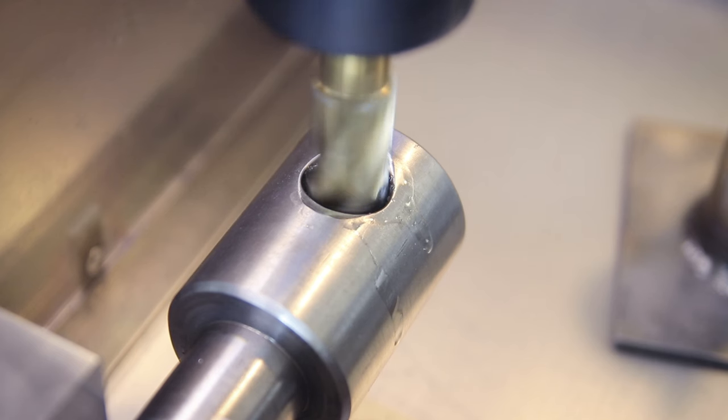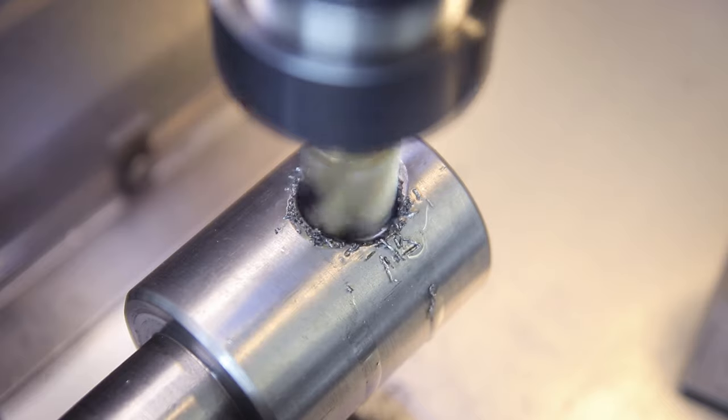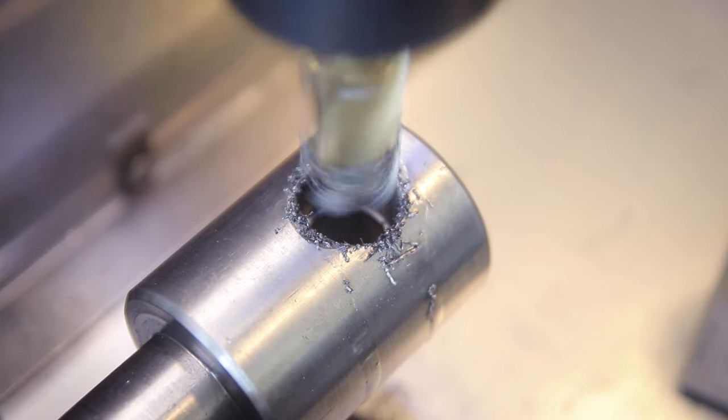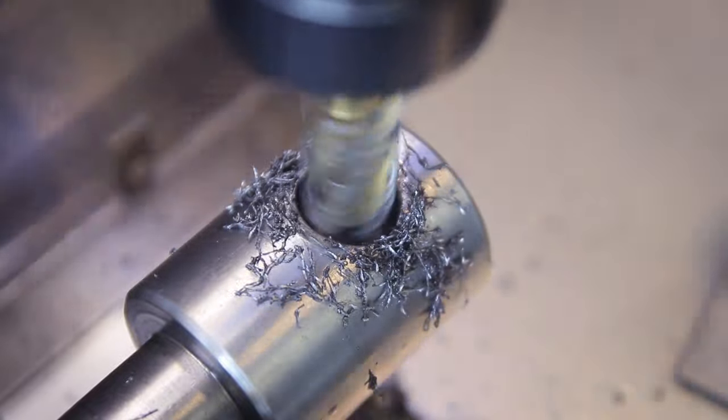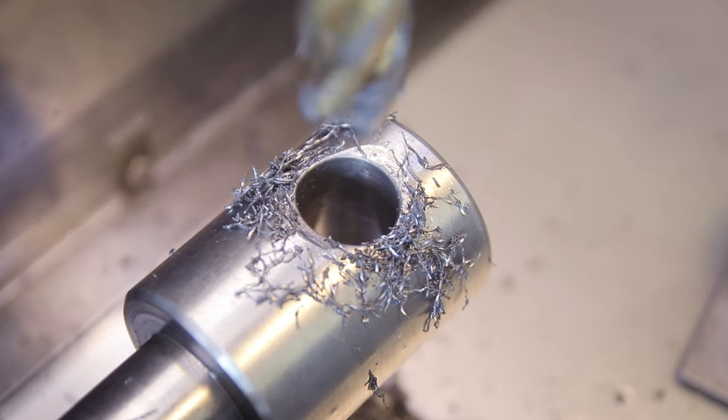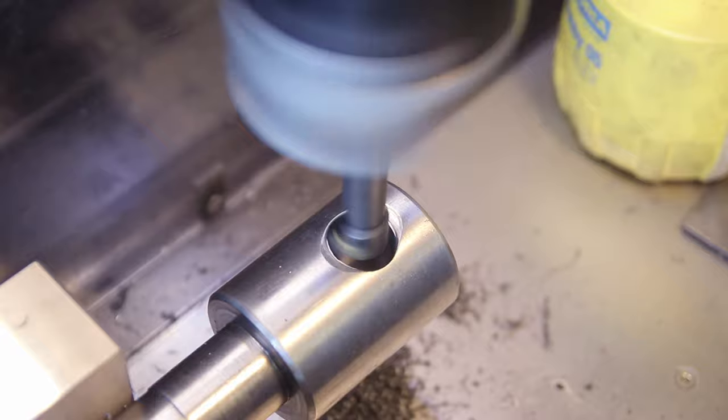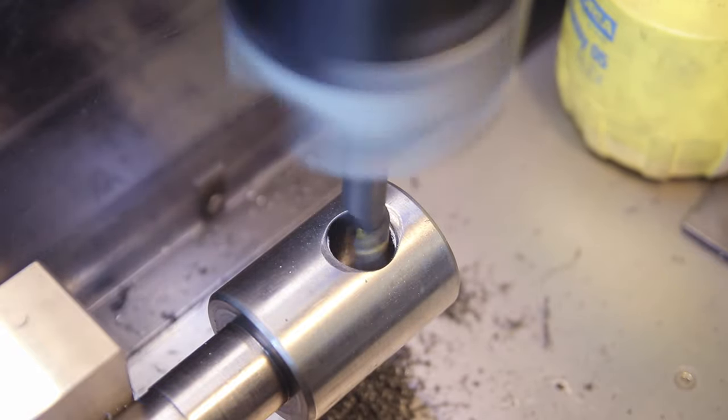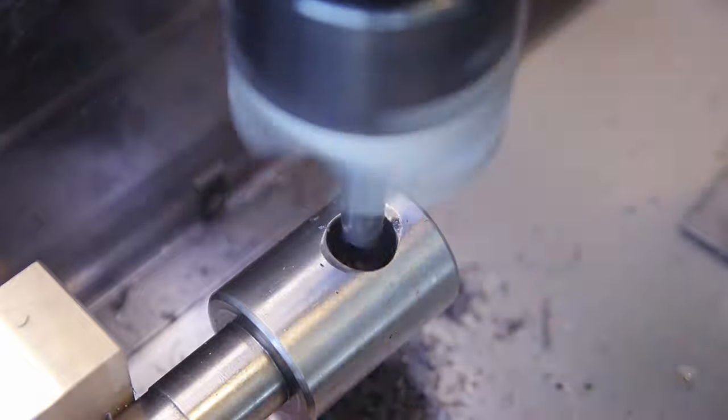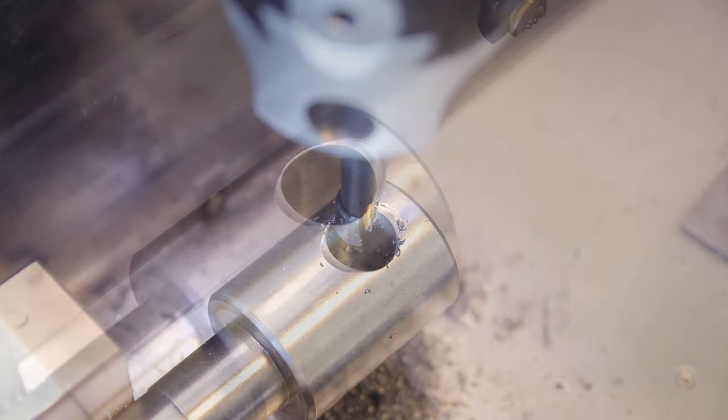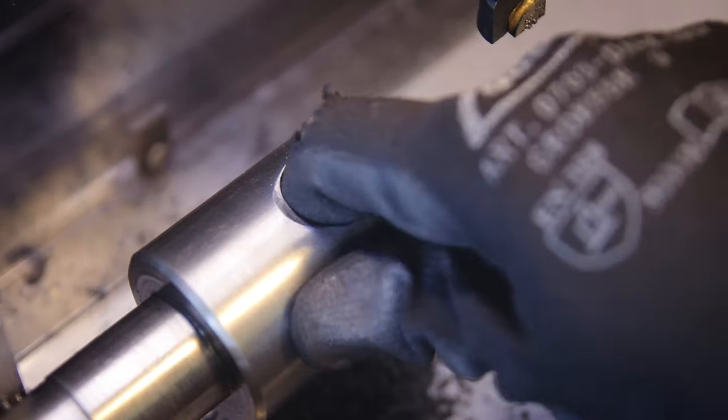I started preparing this first using an end mill to save some time and then cleaned the hole up with the boring head. So now we have a nice straight clean hole that's actually round.